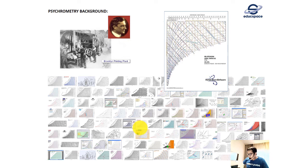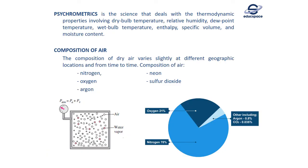If you search on Google for psychrometric charts you will find hundreds of different kinds, but they all show essentially the same air properties: dry bulb temperature, wet bulb temperature, relative humidity, humidity ratio, specific volume, enthalpy and so on. By definition, psychrometrics is the science that deals with the thermodynamic properties involving dry bulb temperature, relative humidity, dew point temperature, wet bulb temperature, enthalpy, specific volume and moisture content. The chemical composition of dry air is normally about 78–79% nitrogen, 20–21% oxygen, and traces of argon, neon and sulfur dioxide. Moist air is composed of dry air plus water vapor.